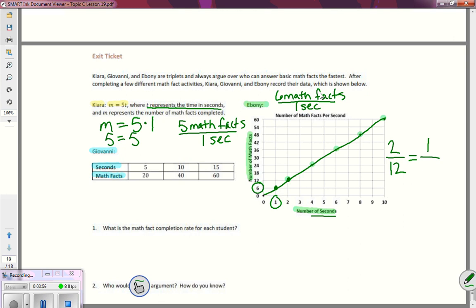And if I want to get down to one second, two divided by two is one. So 12 divided by two would give me my six math problems. So I could use the chart, or I could make an equivalent ratio there to find out her unit rate.